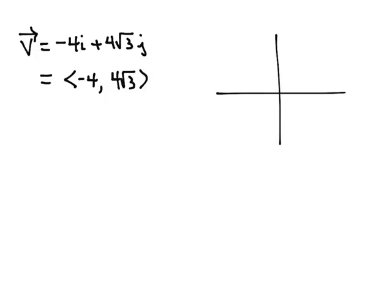So let's look at this vector. If we go left 4 and go up 4 square roots of 3, then this is the vector v that we're talking about.